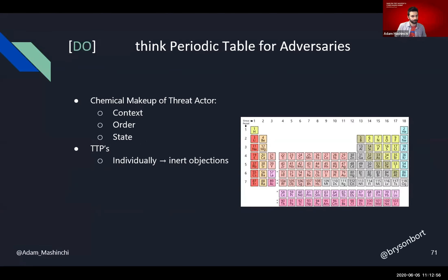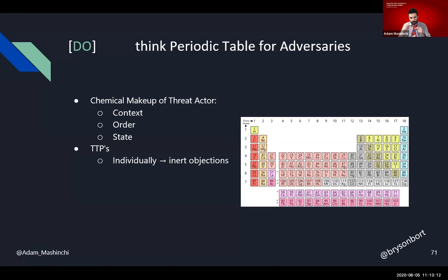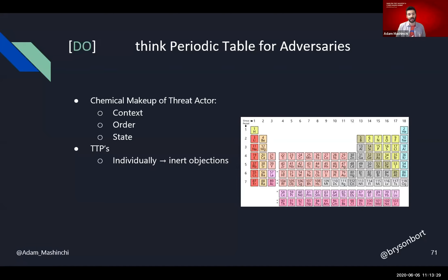Instead, think of it as a periodic table for adversaries. The chemical makeup of these threat actors is context, an order of operations, a given state — all of these things are important. Although you can wire a threat actor together and create an example with TTPs, keep in mind that those individual icons on the threat matrix are just inert objects. They can be different and manipulated and swapped out. Threat actors combine these together and change constantly — they're organic.